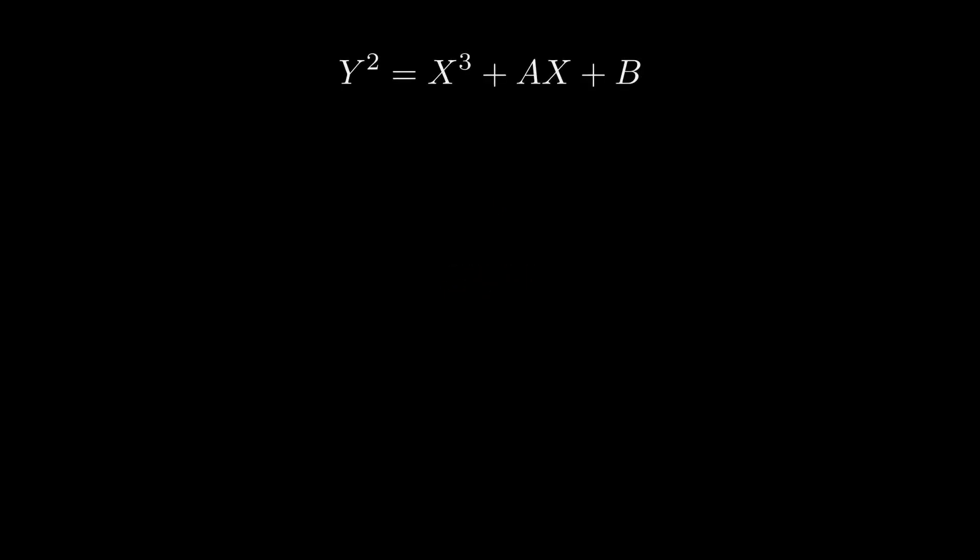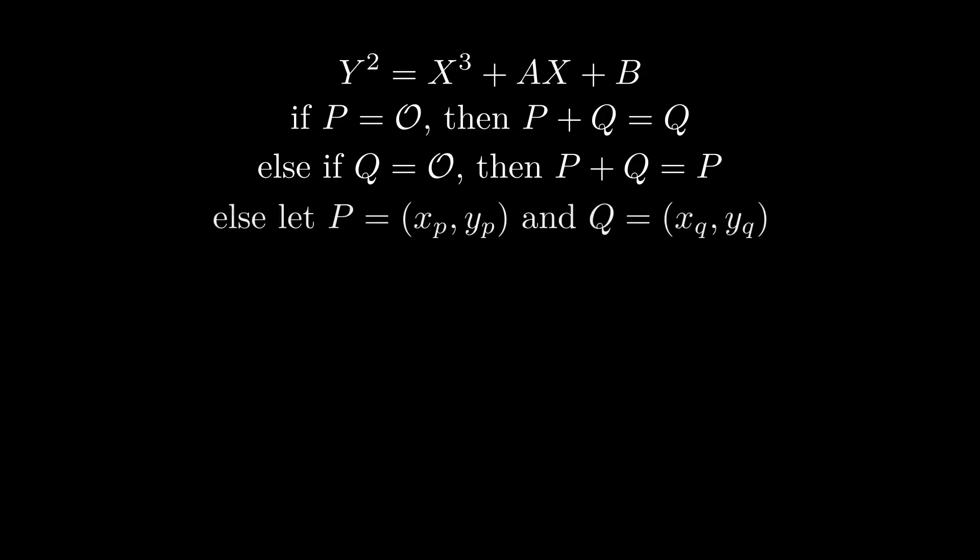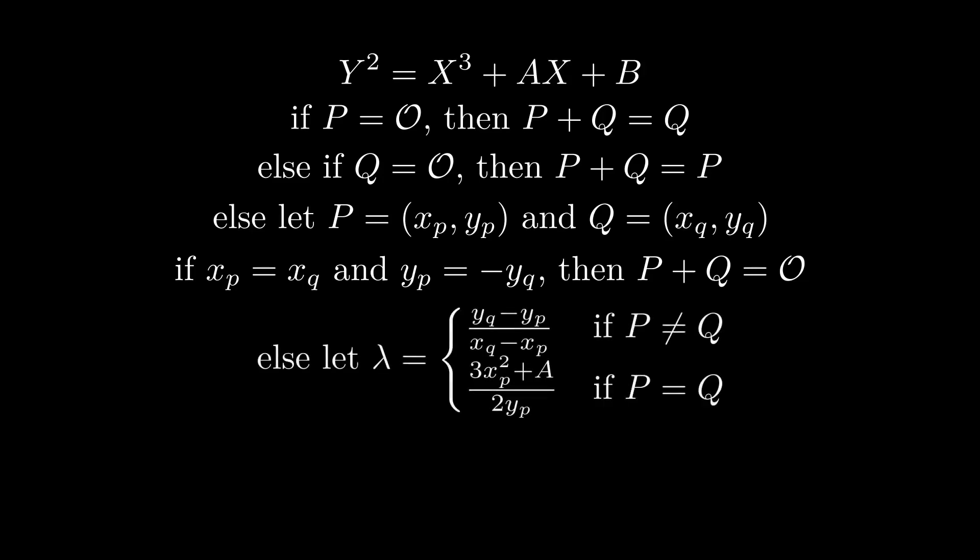Let's write down the point addition algorithm step by step. The first one is just to exploit the fact that the point at infinity is our identity element. Next, we consider the case where our two points have the same x-coordinate and opposite y-coordinates, in which case they sum together to the point at infinity. Don't be intimidated by this next part. It's just calculating the slope of our line that we're drawing. If you look at the top case, it's just rise over run, the difference in y over the difference in x.